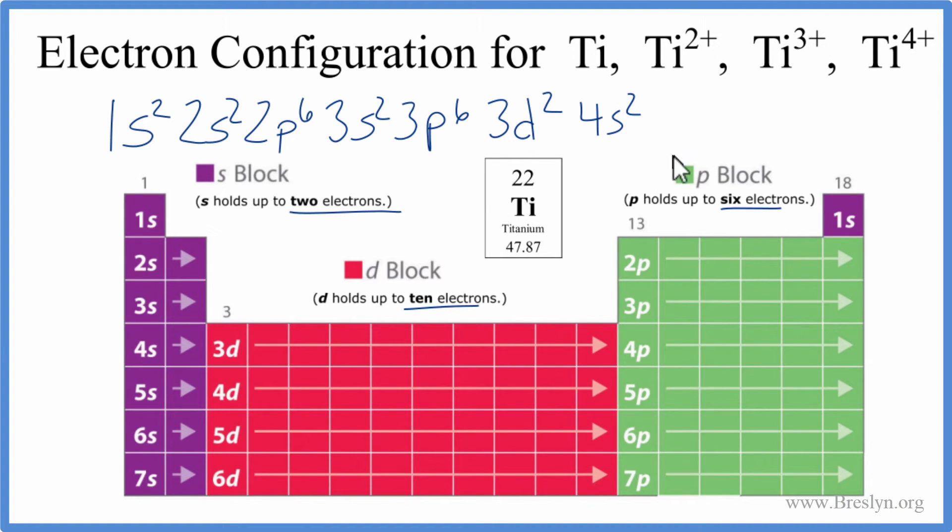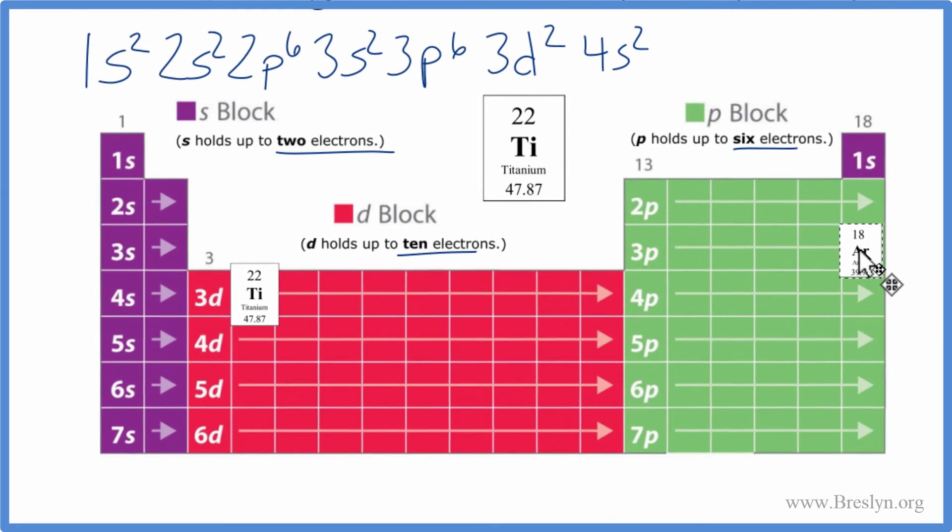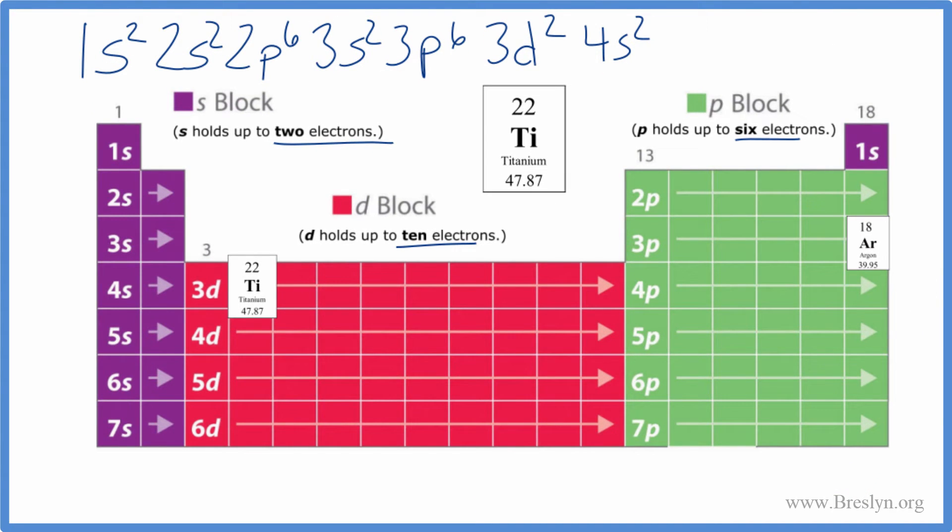So we have titanium, but let's write this in a condensed format. So on the periodic table, titanium is the 3d2, 4s2. So we find 4s1, 4s2, and then 3d1, 3d2. So that's where we find titanium. We'll go back to the noble gas that comes before titanium. That's argon right here. So we have argon there. We write AR. We put brackets around it. And then we write what comes after the argon, which is 4s1, 4s2, and then 3d1, 3d2.